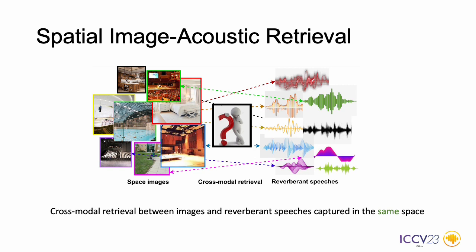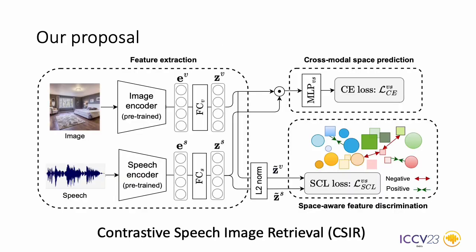For example, given an image of a specific space, we would like to retrieve the audio that is produced within that space, and vice versa. To tackle this novel retrieval task, we propose a solution that exploits contrastive learning to emphasize the correspondence of space among multimodal inputs.